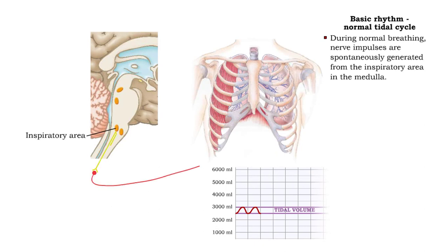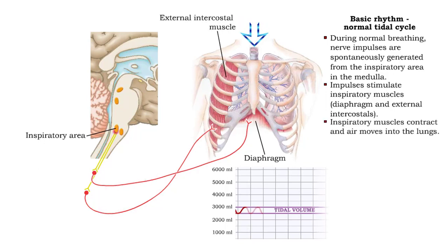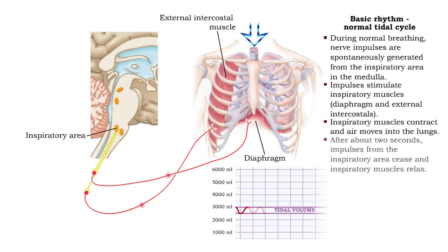Normal inspiration is initiated when impulses from the inspiratory region stimulate the inspiratory muscles — the diaphragm and external intercostals — to contract. Contraction of these muscles moves air into the lungs. After about two seconds, impulses from the inspiratory area to the inspiratory muscles cease, and the muscles relax.